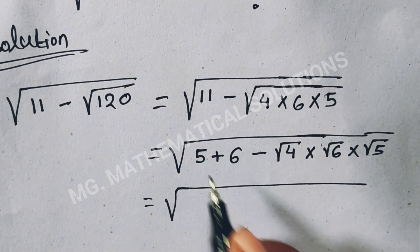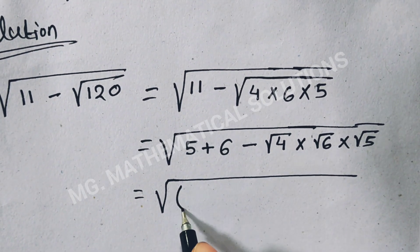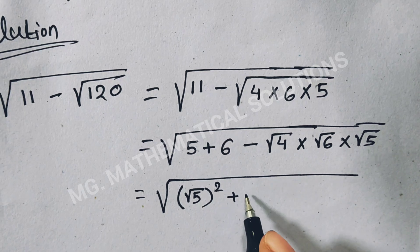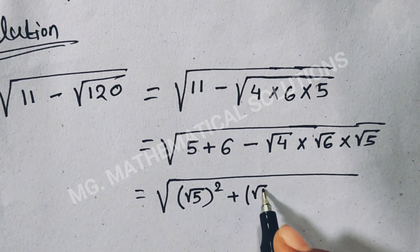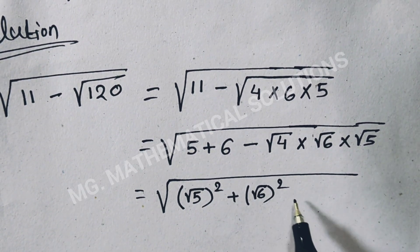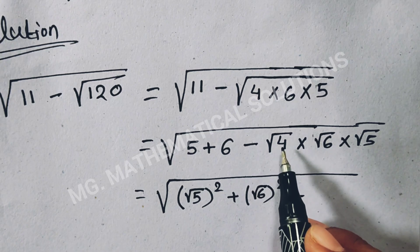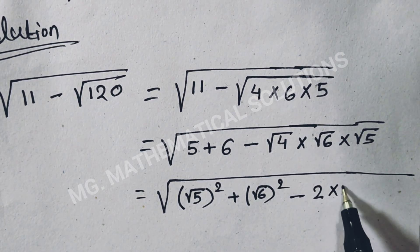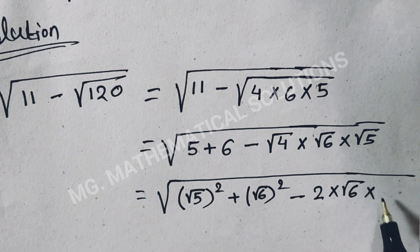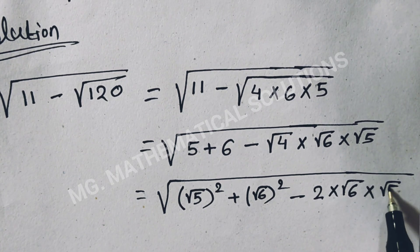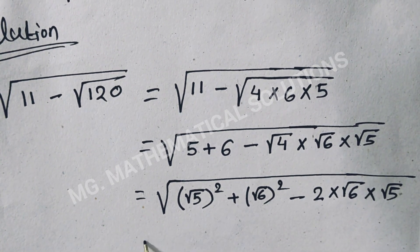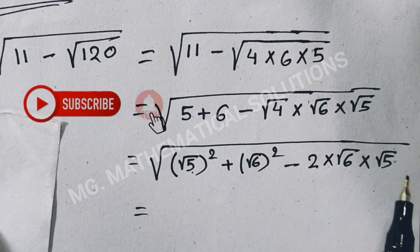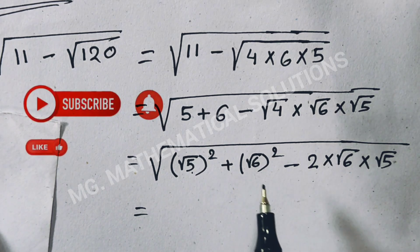5 we can write as root 5 squared, 6 we can write as root 6 squared, minus root 4 means 2 times root 6 times root 5, equals. Now we see that this term matches the formula a minus b whole square.